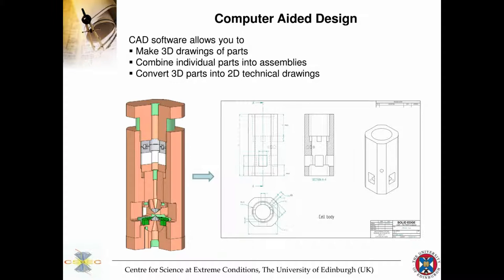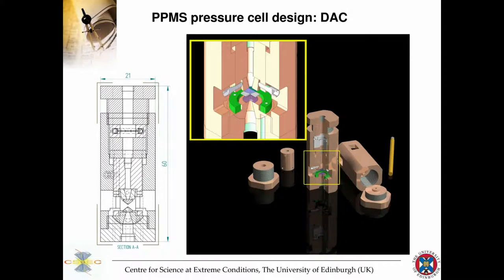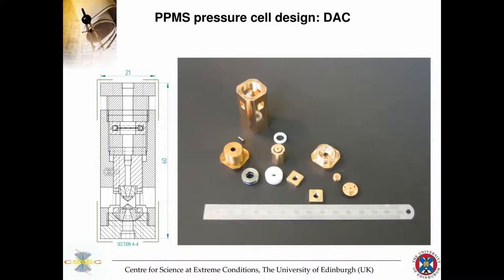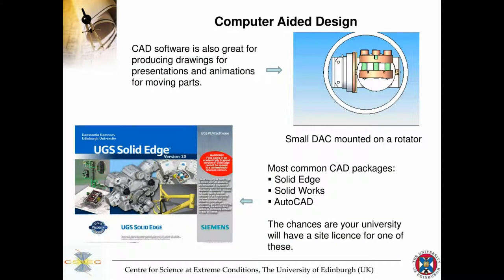One of the most important engineering tools is computer-aided design (CAD), which allows you to create 3D shapes of parts, put them in assemblies, do cross-sections, and put those cross-sections into technical drawings for the workshop. Sometimes you can convert those shapes into machining codes to transfer directly to a lathe. This is an example of a pressure cell built for PPMS — the Physical Property Measurement System by Quantum Design — which is a diamond anvil cell shown in 3D rendered cross-section. You can make very clear pictures, verify that parts don't interfere with each other, and confirm they fit well.